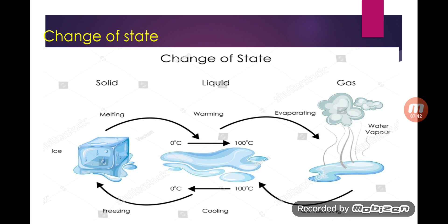The melting point is the temperature at which a solid starts melting into liquid form. Further on heating, liquid starts boiling and changes into water vapor — that is called evaporation. So first heating changes solid to liquid, and further heating changes liquid to gas, and vice versa on cooling.